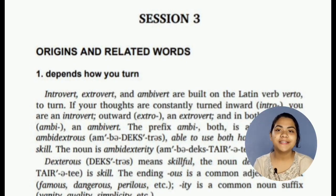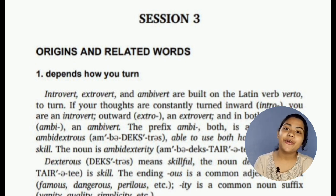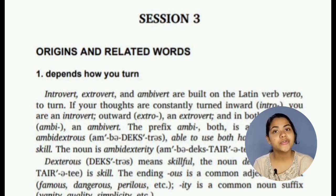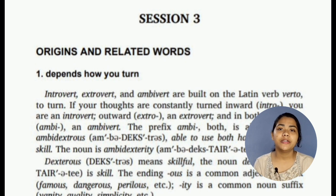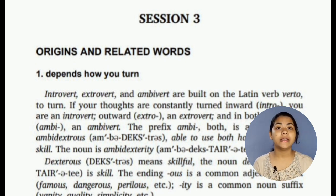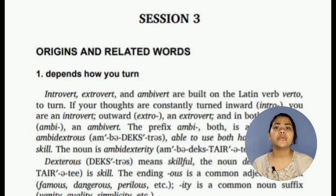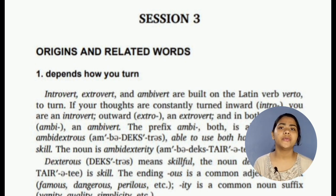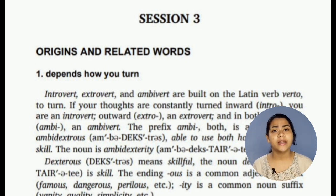Here the first words we can see are introvert, extrovert, and ambivert — we know these already. If your thoughts are constantly turned inward you are an introvert, outward you are an extrovert, and in both directions equally you are an ambivert. The prefix 'ambi' means both, and is found in 'ambidextrous,' which means able to use both hands with equal skill.